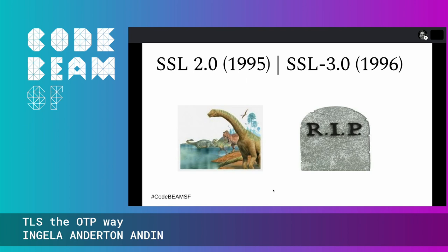Computer history moves a lot quicker than human history. The first version of the protocol, SSL 2.0, was developed by Netscape in 1995. This version was never released to the public and is considered prehistoric due to all the vulnerabilities found. It was quickly replaced by SSL 3.0, the first version made a standard by the IETF. But this version is also considered dead because of the so-called Poodle attack discovered in 2014 — an ingenious attack where the attacker alters the padding, observes error messages, and is finally able to decrypt the message.